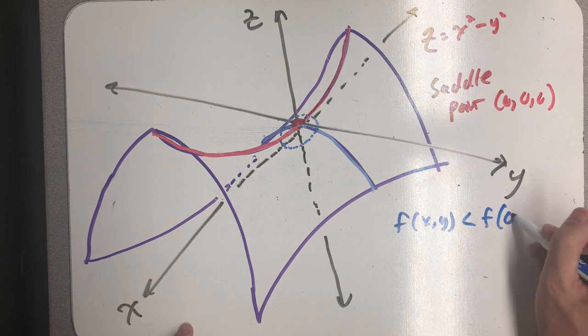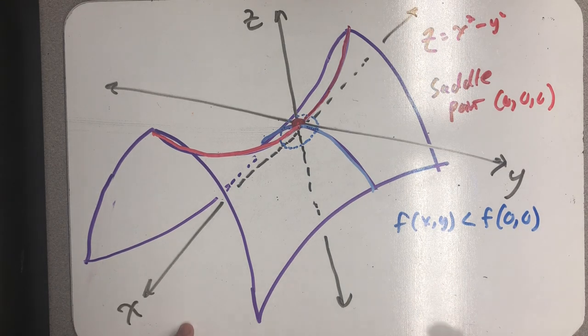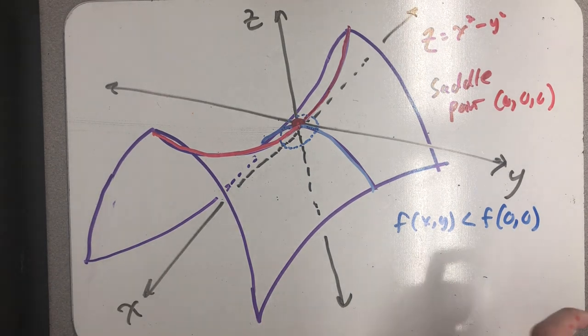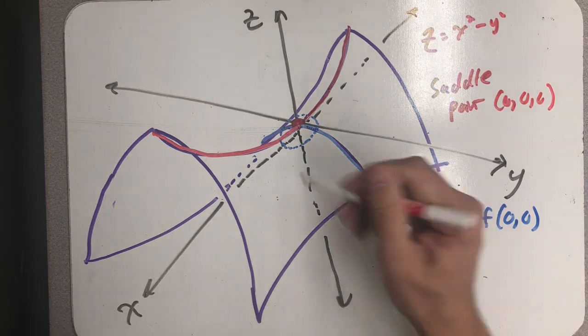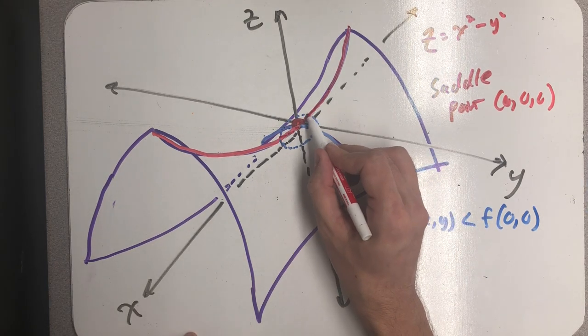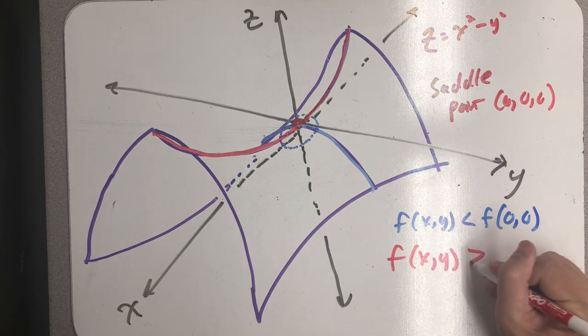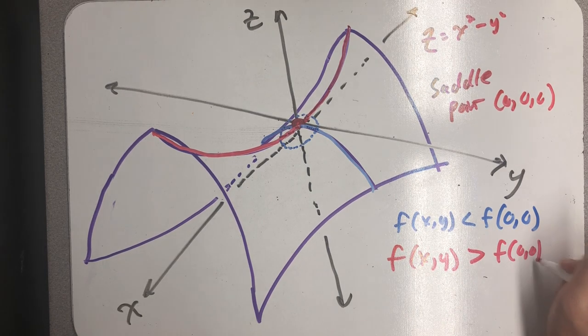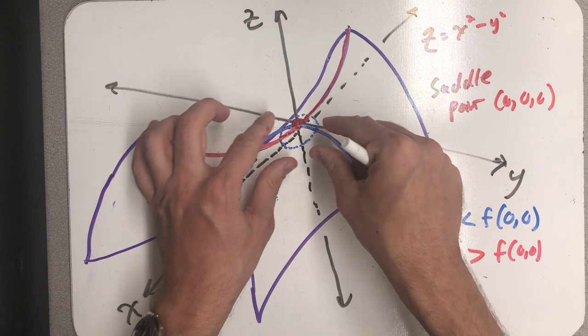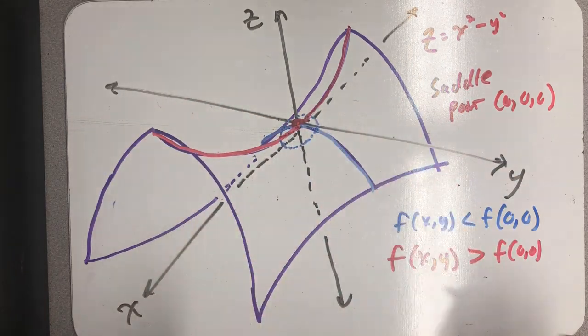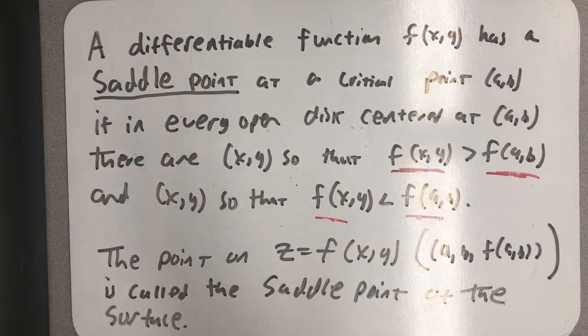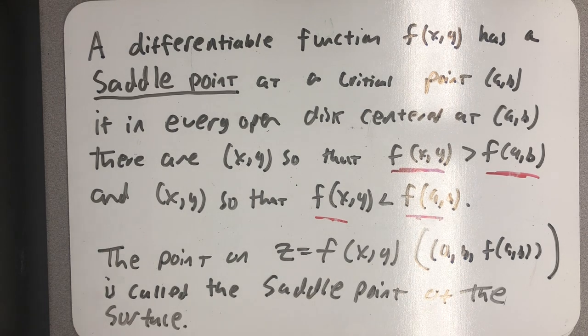So if I imagined a disk in the domain, every point on this path satisfies the inequality f(x, y) is less than f(0, 0). And all of the points on this path in that disk satisfy this inequality. Every open disk centered at that point would contain a little bit of this path and a little bit of that path. So we will have satisfied this definition.